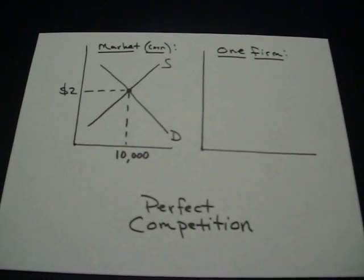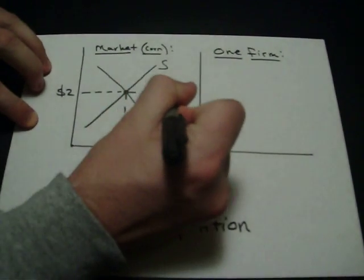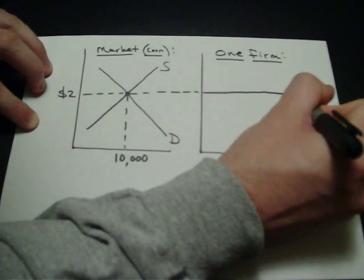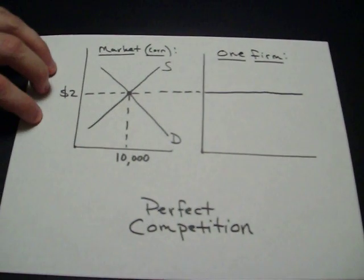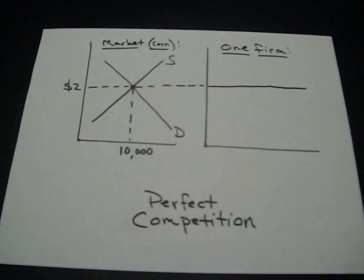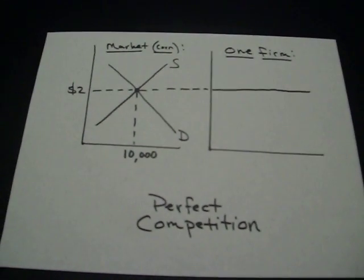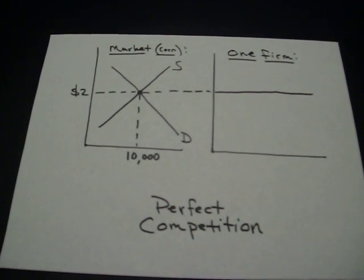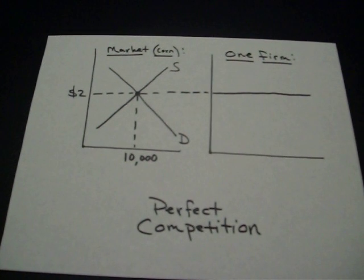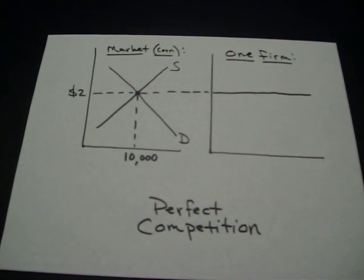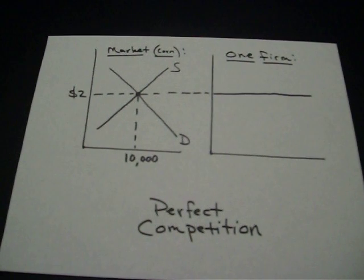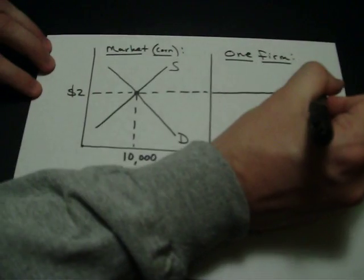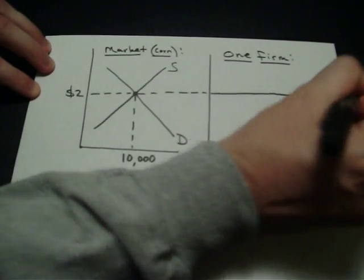Let's look at our one firm. They're accepting this price. The demand curve for their corn is completely elastic. The firm is a price taker. They're all charging $2. If this firm is charging $2 for every single one that they sell, the additional revenue for selling one more would be $2 also. So that's their marginal revenue line.